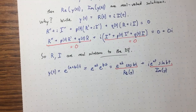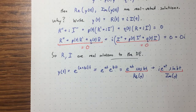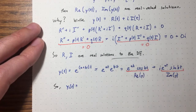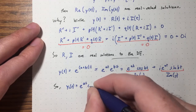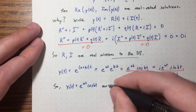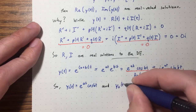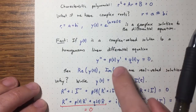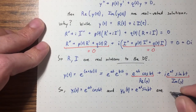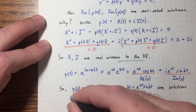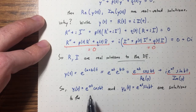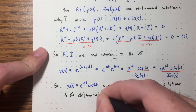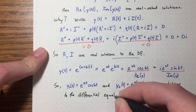So y1 = e^(at)cos(bt) and y2 = e^(at)sin(bt). These are real-valued solutions to the differential equation — there are no complex numbers in them. These are just nice real-valued functions.